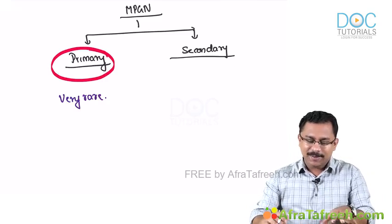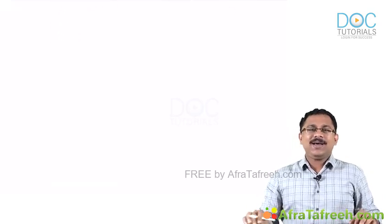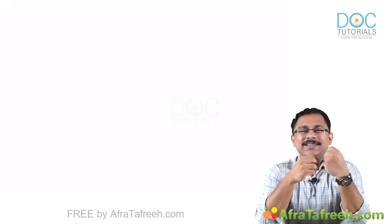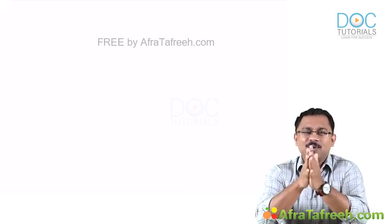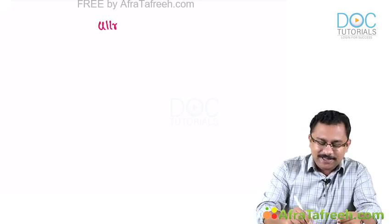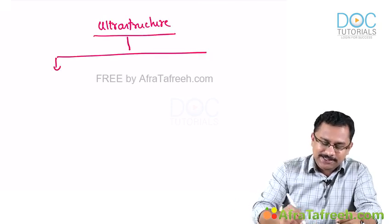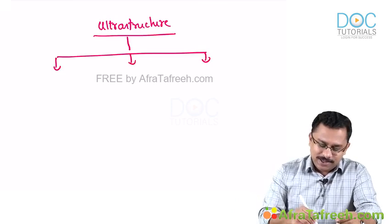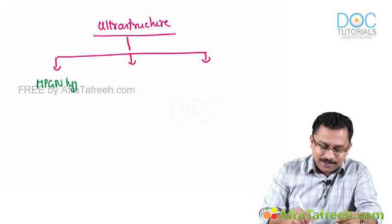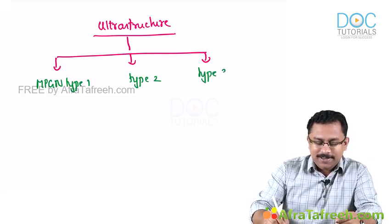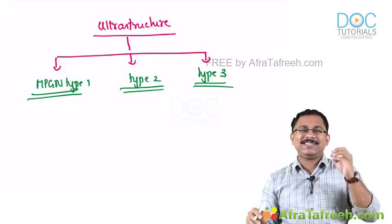Coming to the classification of MPGN, there are two classifications. The old classification is based on ultrastructure, and a newer classification is based on pathology. In the ultrastructure-based classification, MPGN is classified into three types: type 1, type 2, and type 3.